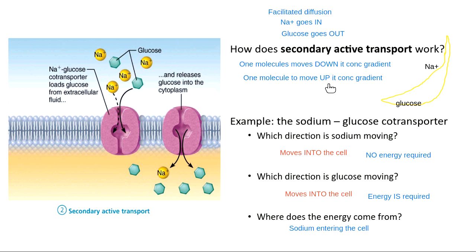What questions do we have about secondary active transport? Nicole asked, would sodium leave the cell with glucose's energy? To get sodium back out of the cell, we use the sodium-potassium pump — that's primary active transport, requiring ATP. One of the things we use the energy from glucose to make is ATP, and we use some of that energy to pump those sodiums back outside.